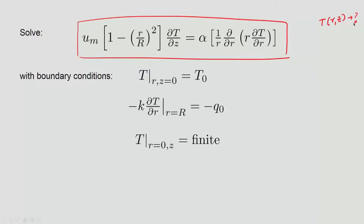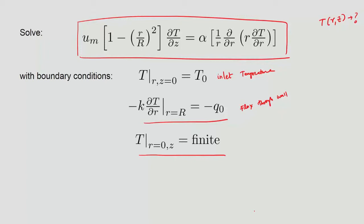The remaining governing equation contains ∂T/∂z and the radial diffusion terms, so we seek T as a function of r and z. The boundary conditions are: inlet temperature T₀ at z equals 0; constant heat flux q₀ through the wall at r equals R; and finite temperature at r equals 0, which eliminates any logarithmic terms that would blow up at the axis.